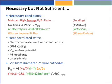Deuterium diffuses in palladium very, very fast. We can load our cathodes in a day or two, but we don't see our excess heat for a week or so — 20 to 50 times the diffusional time constant. There is an initiation effect that requires a process other than deuterium diffusion to cause it.